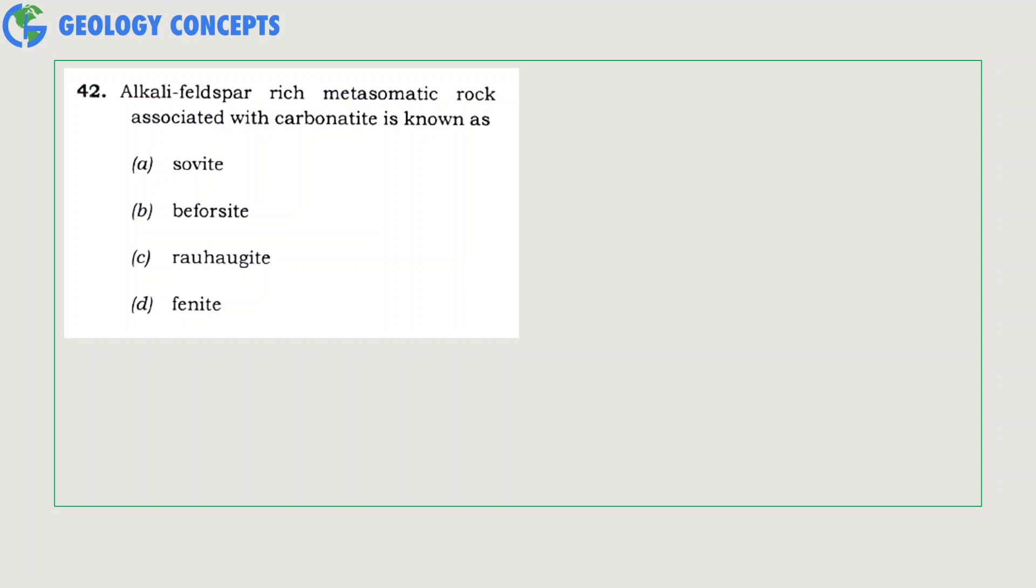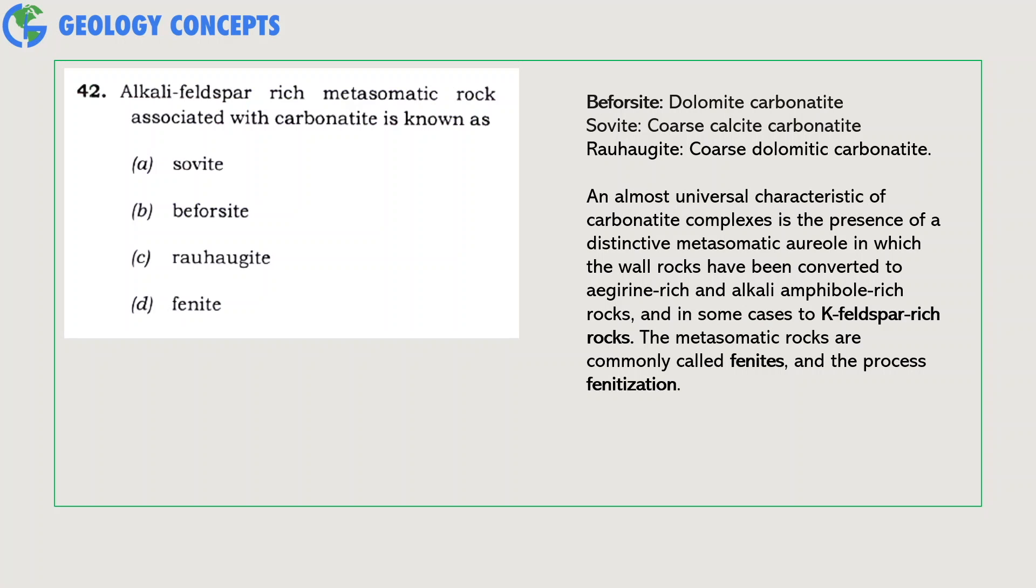Alkali feldspar-rich metasomatic rock associated with carbonatite is known as what? Beforsites are dolomitic carbonatite, sovite is a coarse calcite carbonatite, and rauhaugite is a coarse dolomitic carbonatite. In most carbonatite complexes there is presence of a distinct metasomatic aureole in which all the wall rock have been converted to aegirine-rich and alkali amphibole-rich rocks, and in some cases to potassium feldspar-rich rocks. The metasomatic rocks commonly occurring along these settings are called fenites. Hence, option D fenite is the correct answer.